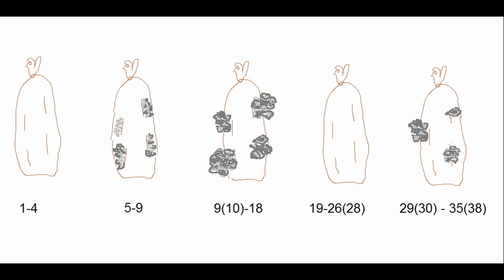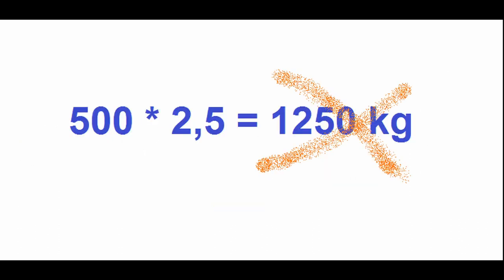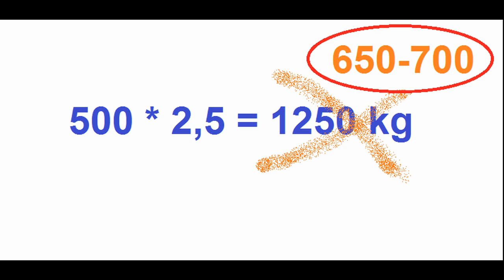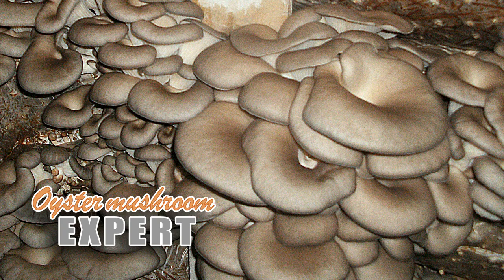Another batch of substrate will give the first flush; several batches will be with primordia; another batch will be between the first and second harvest. If you mathematically calculate the yield using this scheme, it turns out that you can harvest at least 900 kg of oyster mushrooms every month — not 1,250 kg as many people think, but only 900 kg. But in practice, most often it is not possible to collect more than 650 to 700 kg. This needs to be taken into account when you calculate your profit.